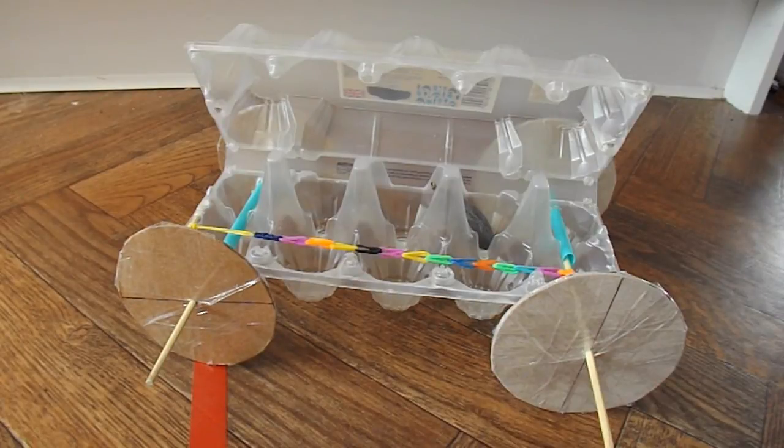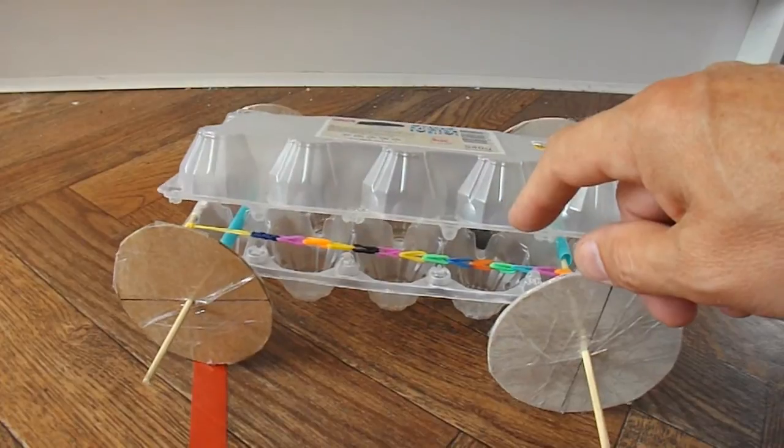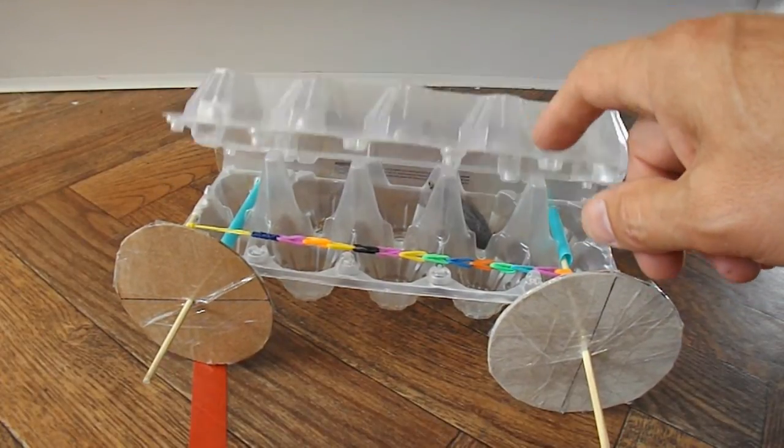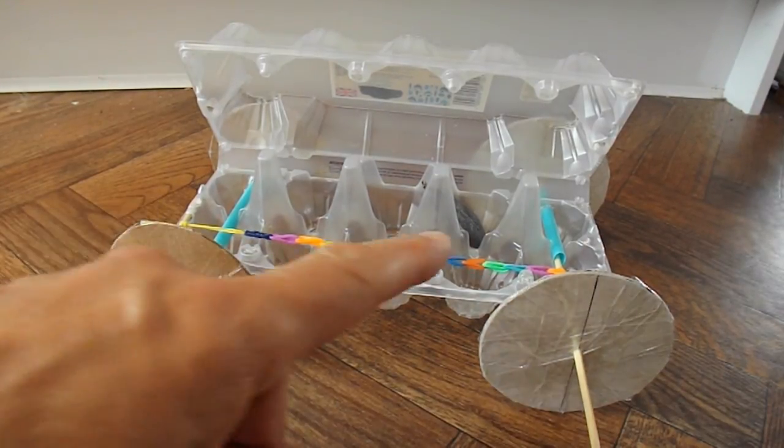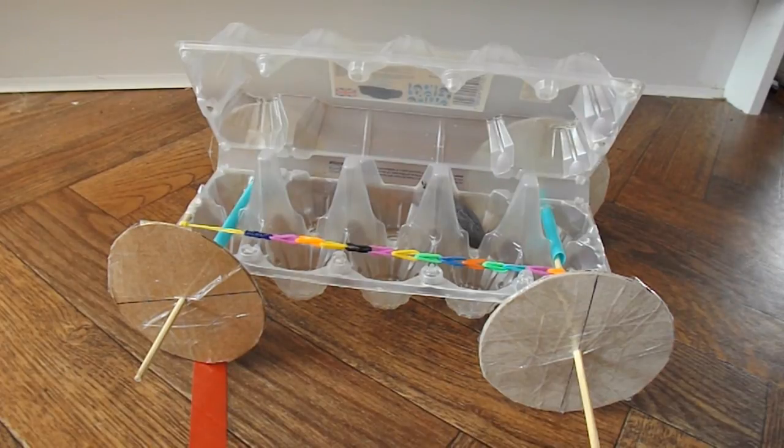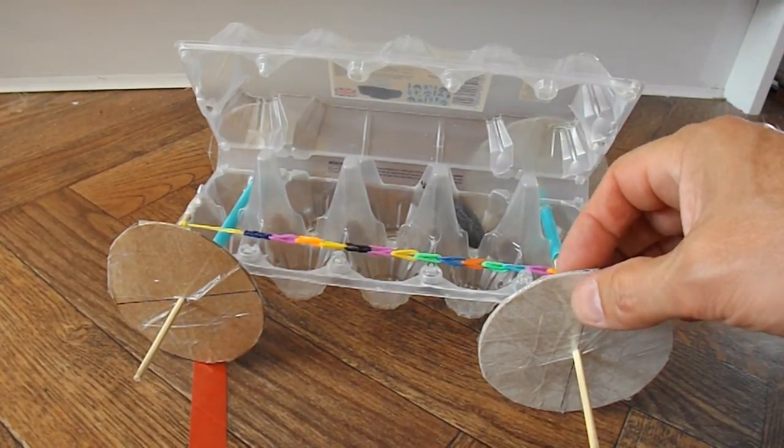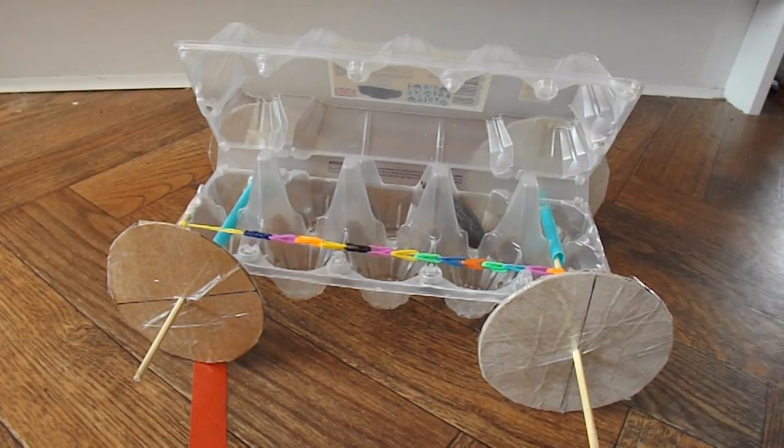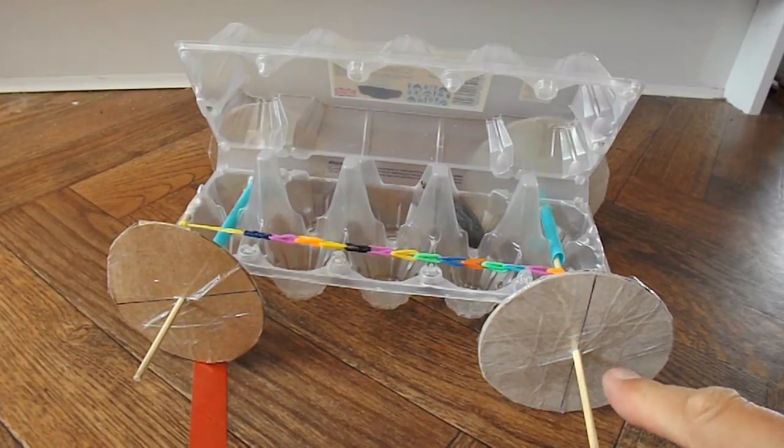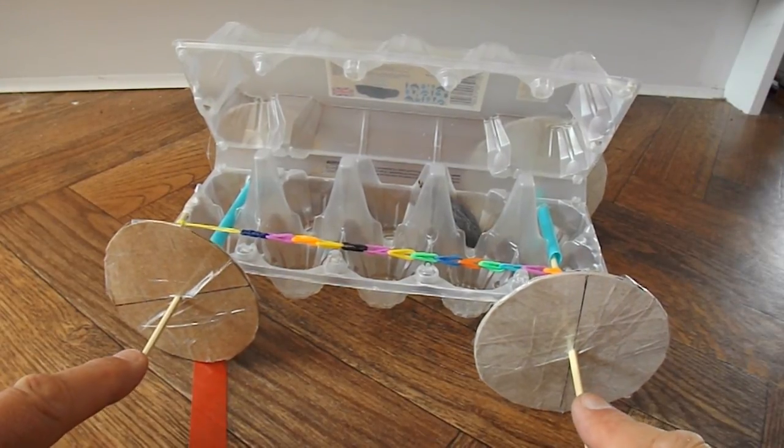Summary time. What have we got? We've got an egg box. This one happens to be a plastic egg box. I'd rather use one of those cardboard ones. We've got wheels made from cereal boxes. Each wheel is four layers, four discs, stuck together with sticky tape.